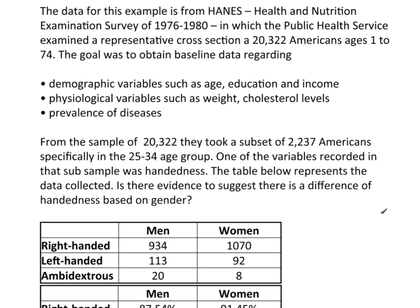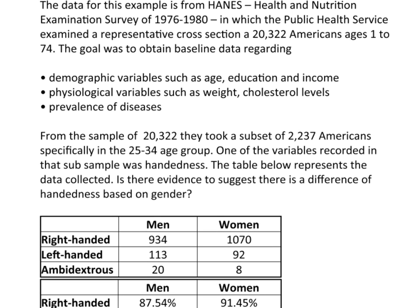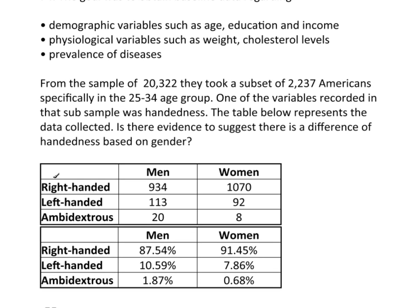Is there evidence to suggest there's a difference in handedness based on gender? Now I have two variables here. The goodness of fit would have had one variable, perhaps just handedness with different levels. Now I have two variables: handedness and gender. So this creates a table.